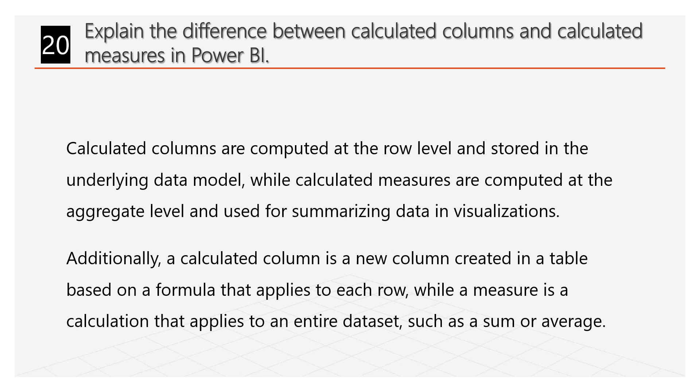Explain the difference between Calculated Columns and Calculated Measures in Power BI. Calculated Columns are computed at the row level and stored in the underlying data model, while Calculated Measures are computed at the aggregate level and used for summarizing data in visualizations. A Calculated Column is a new column created in a table based on a formula that applies to each row, whereas a Measure is a calculation that applies to an entire dataset, such as a Sum or an Average.